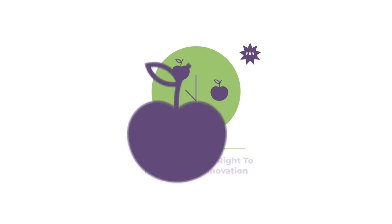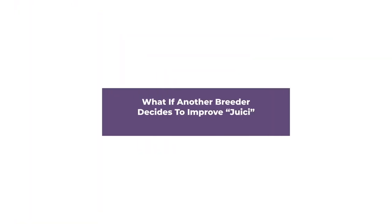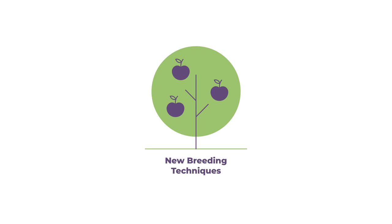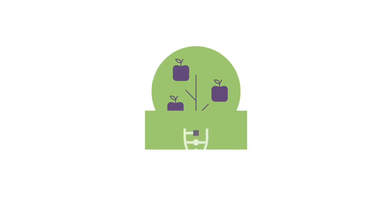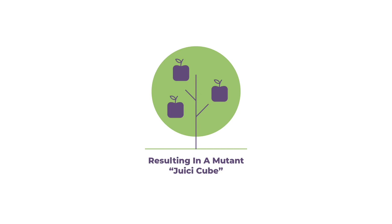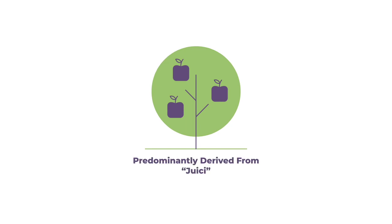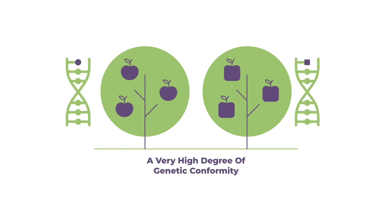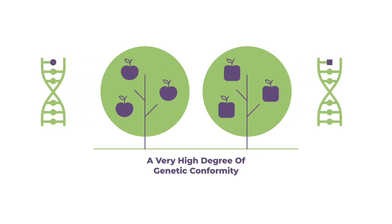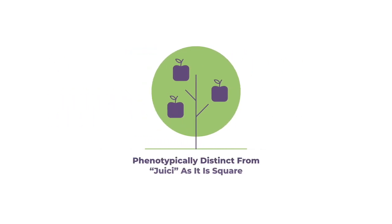But what if another breeder decides to improve Juicy even further — for instance, with the help of new breeding techniques — resulting in a mutant called 'Juicy Cube'? Juicy Cube is an essentially derived variety because it is predominantly derived from its initial variety, Juicy, demonstrated by a very high degree of genetic conformity.